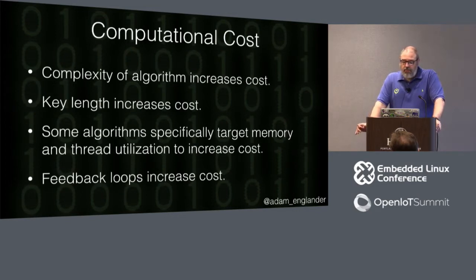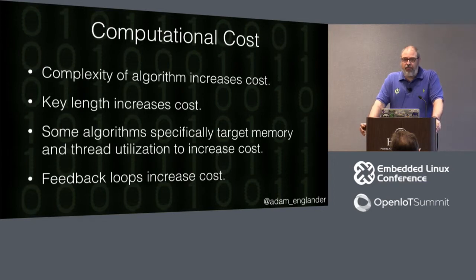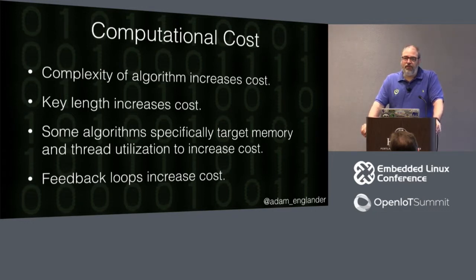Computational cost: complexity of the algorithm increases the cost. A few years ago there was Triple DES — DES wasn't safe enough, so doing it three times gave you Triple DES, three times the key size — and that was considered secure. Today that's not secure because it's not complex enough. In the last seven years, the emergence of ASICs and using GPUs to process mathematics — which they're very good at — to hack and crack passwords and cryptography has made a lot of the old protocols and algorithms not valid anymore.